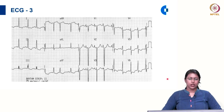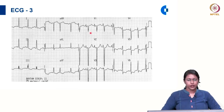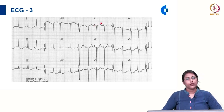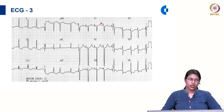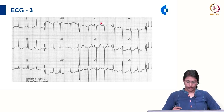Looking at ECG 3, concentrating on lead V1: there is a positive deflection well more than 1 millimetre in amplitude and a negative deflection of duration more than 40 milliseconds. There are findings suggestive of both right atrial and left atrial abnormality. This ECG is suggestive of biatrial enlargement.